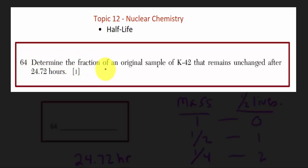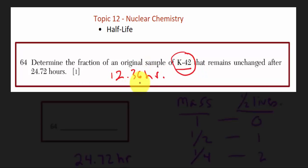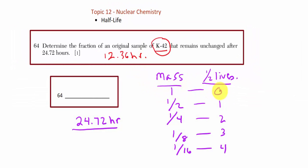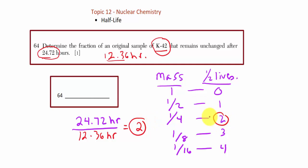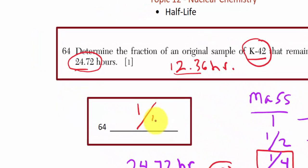Question 64: Determine the fraction of an original sample of K-42 that remains after 24.72 hours. From table N, the half-life of K-42 is 12.36 hours. Dividing 24.72 by 12.36, we've experienced exactly two half-lives. Starting with a whole sample: after one half-life you have one half, after two half-lives you have one quarter. The answer is one quarter remaining.